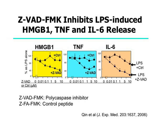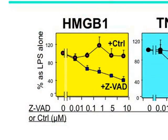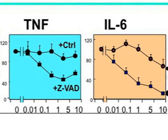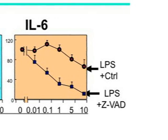Macrophage-like RAW cells were stimulated with LPS, a bacterial toxin known to cause apoptosis, and the cells received either control peptide or the caspase inhibitor ZVAD. As shown here, compared to the control group, LPS-induced HMGb1 release was dose-dependently reduced with ZVAD treatment. Likewise, LPS-induced TNF and IL-6 release were also significantly reduced by ZVAD treatment, indicating that the caspase inhibitor also reduces LPS-induced HMGb1 and other cytokine release.